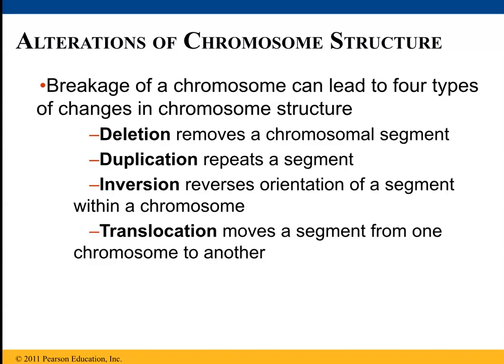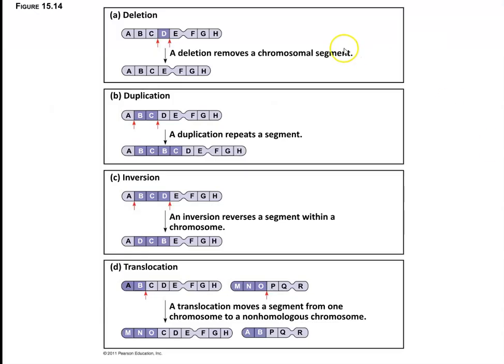In addition to nondisjunction, other chromosomal abnormalities could change the structure of chromosomes. For instance, you could have a deletion, a duplication, or an inversion. A deletion is where a large section of the chromosome is missing, leaving only one copy of all the genes in that section. If the deletion spans a gene, that gene would be knocked out.